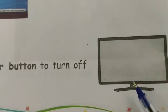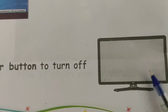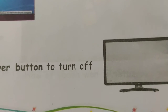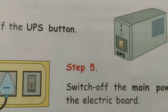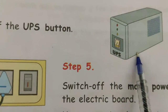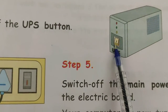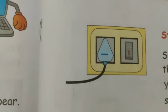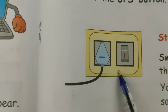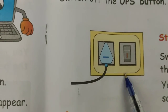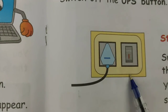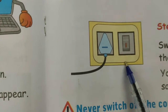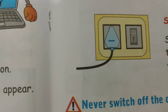Step three: switch off the power button to turn off the monitor. Step four: switch off the UPS button. Step five: switch off the main power button from the electronic board. Now your computer is turned off safely.